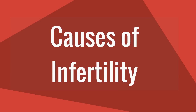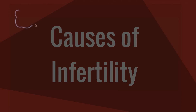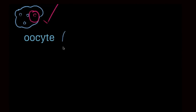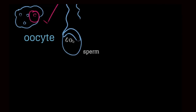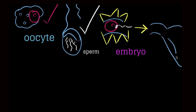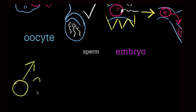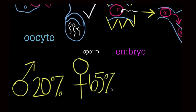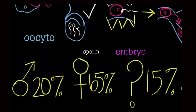What are the possible causes of infertility? There needs to be production of a good oocyte and production of a good sperm. The oocyte and sperm need to meet to generate an embryo, and this embryo needs to make it to the uterine cavity and successfully implant into the endometrium. Male factors account for 20%, female factors account for 65%, and there are unexplained or other conditions in 15%.